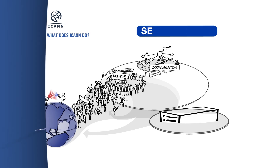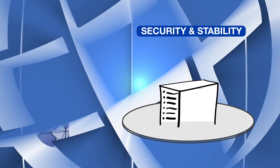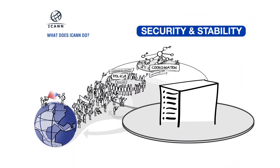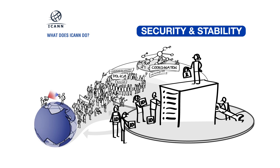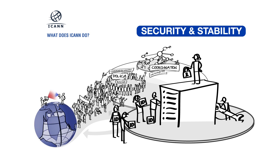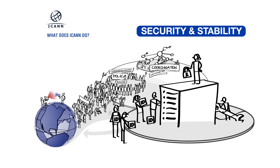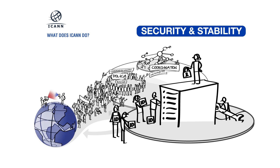Security and Stability: ICANN supports DNS security through technical training and engagement, coordinating and collaborating with the community in the implementation of standards such as DNSSEC.